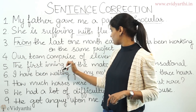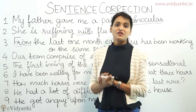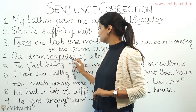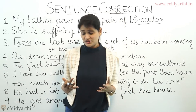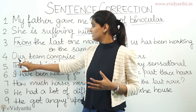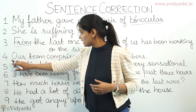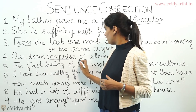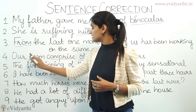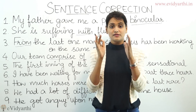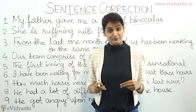Next is: our team comprised of 11 members. What's wrong in this? We never say 'comprised of.' Comprise means consist of — it already has the sense of having something. We cannot say 'our team consists of' and also add 'of' to comprise. So 'comprised of' is wrong. It should be: our team comprises 11 members — 'of' is not used with comprise.